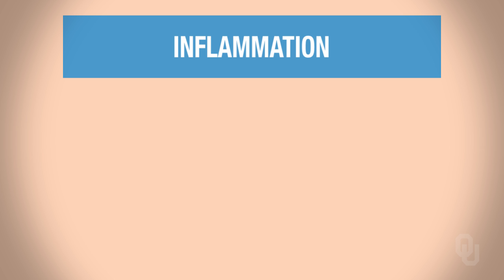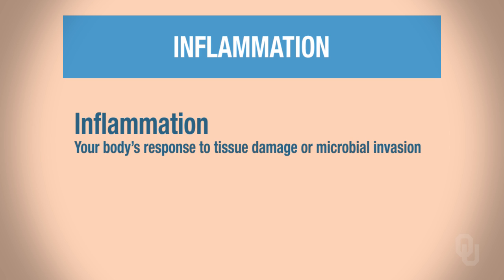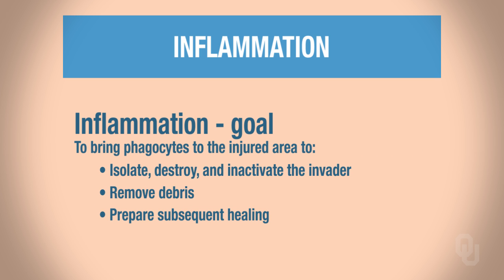Inflammation is also part of innate immunity. It is your body's response to tissue damage or microbial invasion — for example, spraining your ankle or stepping on a nail. The goals of inflammation are to bring phagocytes to the injured area to control invaders before they spread, to destroy and inactivate invaders, remove cellular debris, and begin preparing for healing.